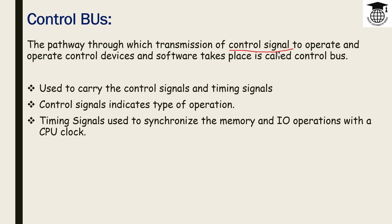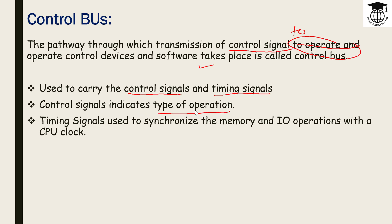The control bus carries control signals to operate control devices. It also carries timing signals used to synchronize memory and I/O operations with the CPU clock. It indicates the types of operation being performed and whether the CPU is accessing memory or I/O devices.